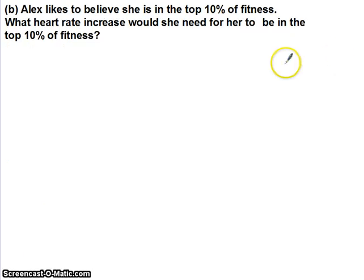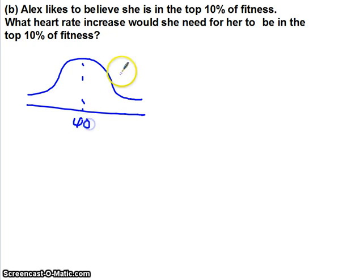Next question is, Alex believes, or would like to believe, she's in the top 10% of fitness. What heart rate increase would she need to be in the top 10%? Again, if we draw out our normal distribution, which had a mean of 40 and a standard deviation of 9.